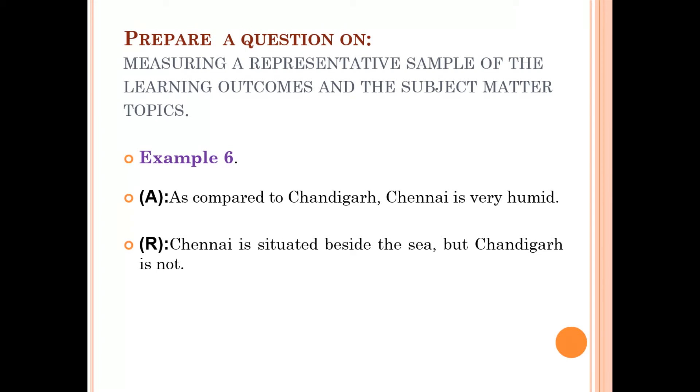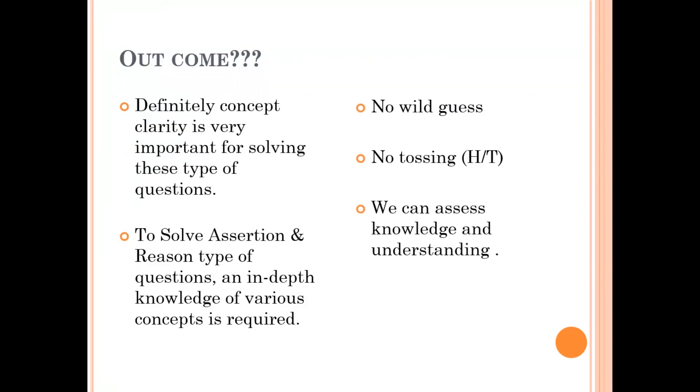Geographically, the student can identify the various cities situated in which state, what is the location. In addition to that, what are the cities near to the coastal area? At the same time, we also judge whether the child has the concept of humidity and how the humidity can be measured and how the percentage of moisture present in the air. Such learning outcomes we can check by framing such questions.